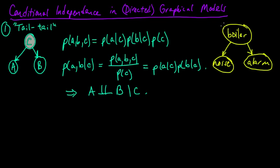But if I knew that the boiler came on — maybe I can adjust the thermostat and make the boiler come on — then hearing the noise would not affect my estimate of the probability of the alarm going off. Because I already knew that the boiler was on, and any estimate of the probability of the alarm going off would just be based on that, and not on hearing the noise afterwards. So conditioned on knowing that the boiler was on, these would be independent. Hearing the noise wouldn't affect my estimate of the probability of hearing the alarm.